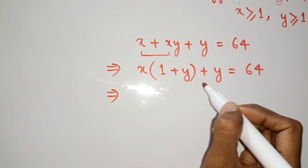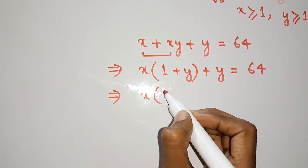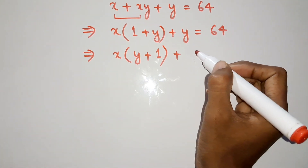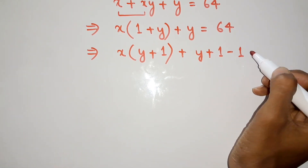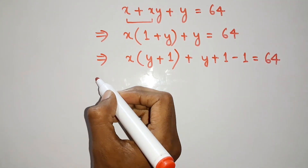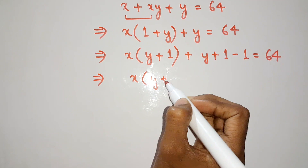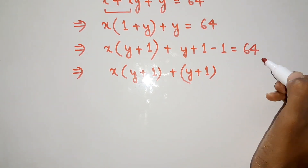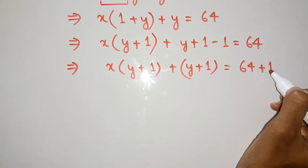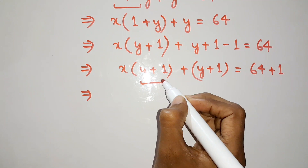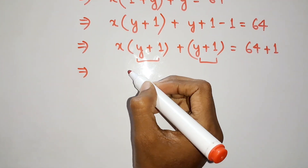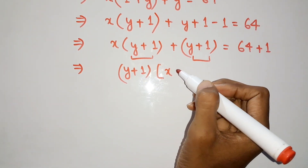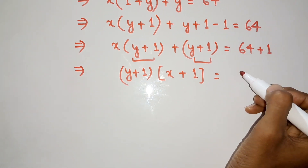Since the first term contains (y plus 1), we rewrite the second term y as (y plus 1) minus 1, keeping the right-hand side as 64. So we have x times (y plus 1) plus (y plus 1) minus 1 equals 64. Moving the minus 1 to the right-hand side gives us x times (y plus 1) plus (y plus 1) equals 65.